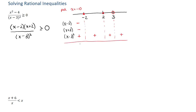In my last row I put whether the overall expression is positive or negative. Negative times negative divided by positive gives overall positive. For something between negative 2 and 2, let's pick x equals 0: 0 minus 2 is negative, 0 plus 2 is positive, giving an overall negative result. Choosing something between 2 and 3, say x equals 2.5: 2.5 minus 2 is positive, 2.5 plus 2 is positive, so overall positive. For the last interval, x equals 5: 5 minus 2 is positive, 5 plus 2 is positive, overall positive.